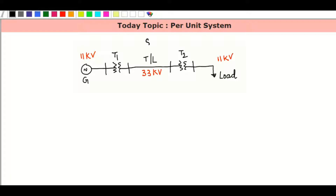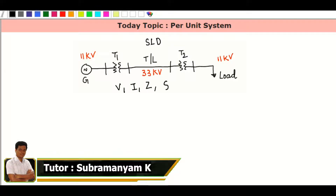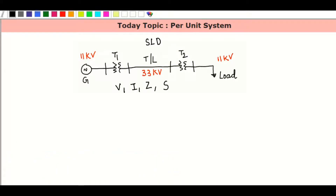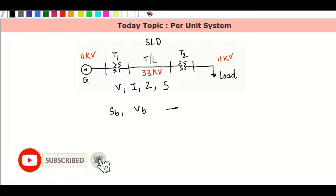This is a single line diagram. In the SLD, voltage, current, impedance, and power details are represented. In the per unit system, you need base values — power and voltage are selected. The remaining two base values need to be calculated using power and voltage base values.